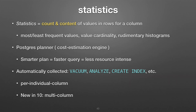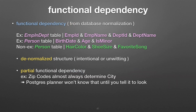The statistics feature was super important because statistics are used by the planner to come up with smarter plans. You can always do an explain and see how it's going to approach executing your query. The problem was it depends on statistics that are gathered to look at your actual data and see what kind of values you have and how many rows. The limitation was that they only did that per column. Well, sometimes you have associated data between columns — that's called a functional dependency. For example, birth date, age, and is_minor are all conjoined and related to each other.